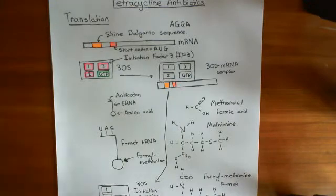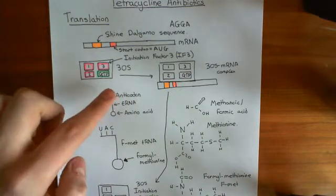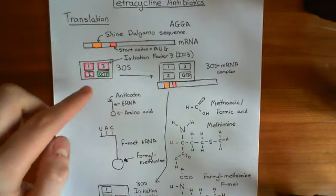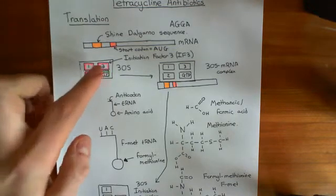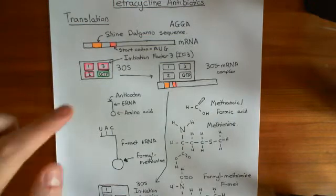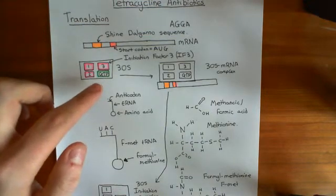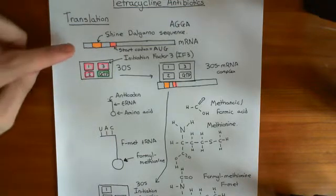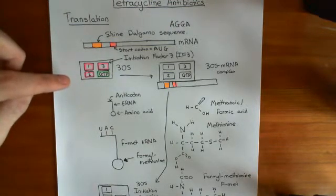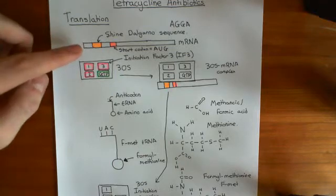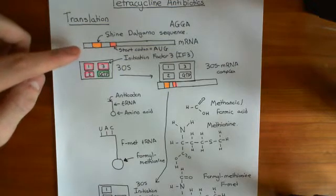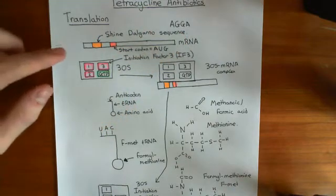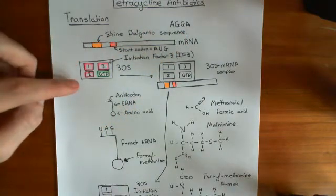We've seen so far that you start off with this 30S ribosomal subunit bound to three initiation factors — initiation factor 1, initiation factor 2, and initiation factor 3 — and also a GTP molecule. The first step is to bind your mRNA molecule to your 30S ribosomal subunit, and this is done via the Shine-Dalgarno sequence, which generally includes the AGGA sequence, which then binds to the 30S ribosomal subunit.